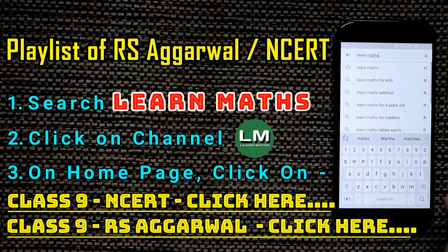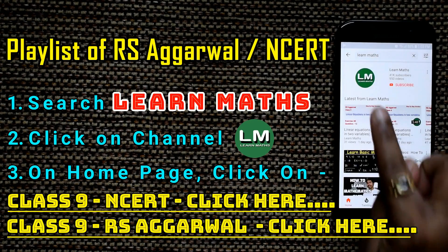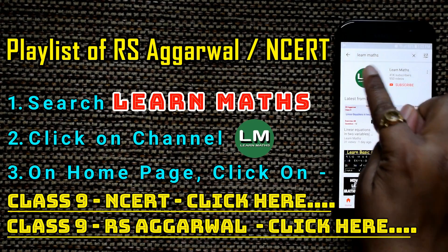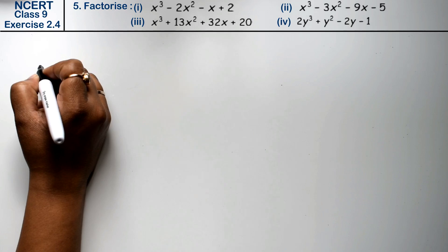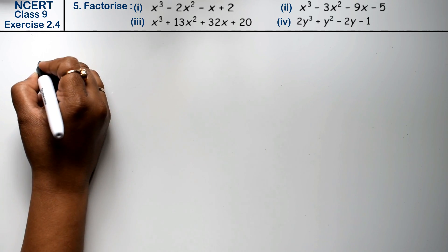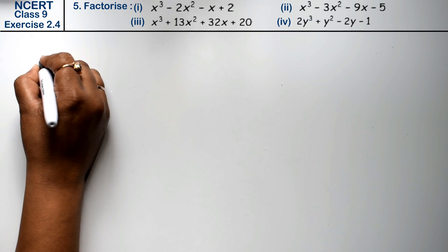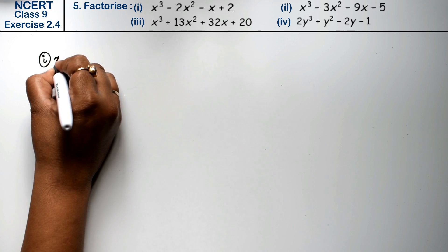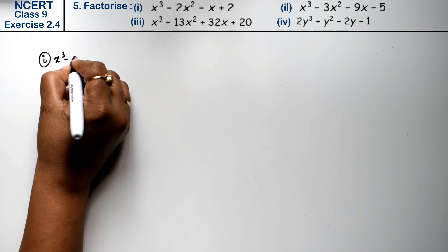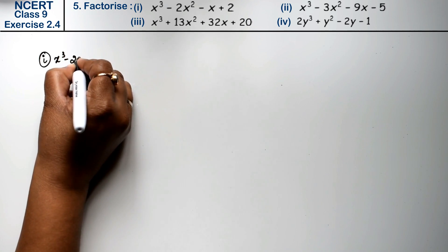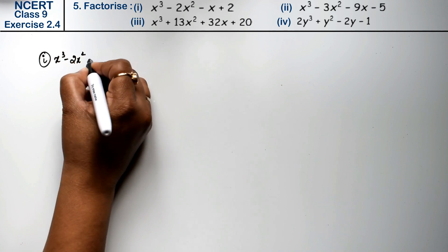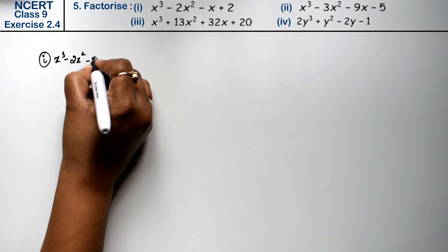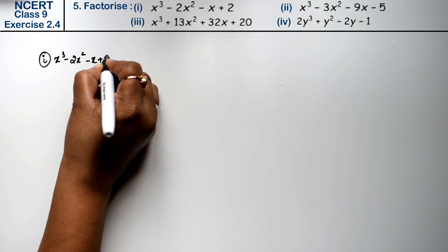Let's do question number 5 of exercise 2.4 on polynomials. Question number 5 says to factorize. The first part is x cubed minus 2x squared minus x plus 2.